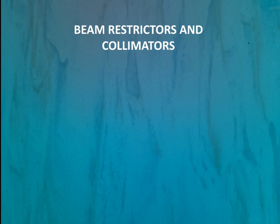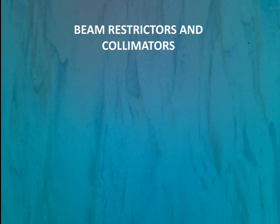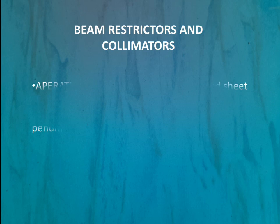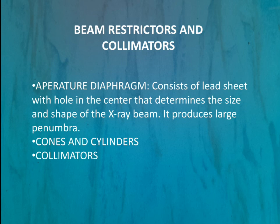Beam restrictors and collimators are devices used to determine the area of radiation exposure — we supply radiation only to the region of interest. For example, when taking an x-ray of the hand, we give radiation only to the area covering the hand bones, not other body parts. The types of beam restrictors are: aperture diaphragm, cones and cylinders, and collimators.